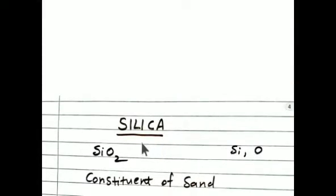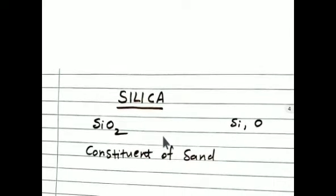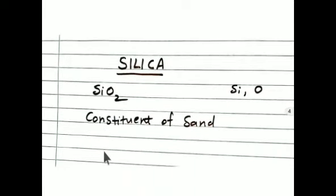Next, silica. Silica is a compound. It consists of silicon and oxygen. SiO2 - that is called silicon dioxide. Silicon dioxide is commonly known as silica. It is the constituent of sand. Silica is the constituent of sand.